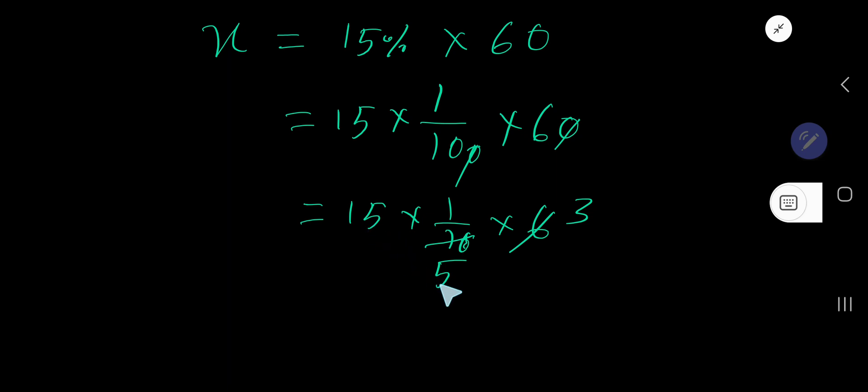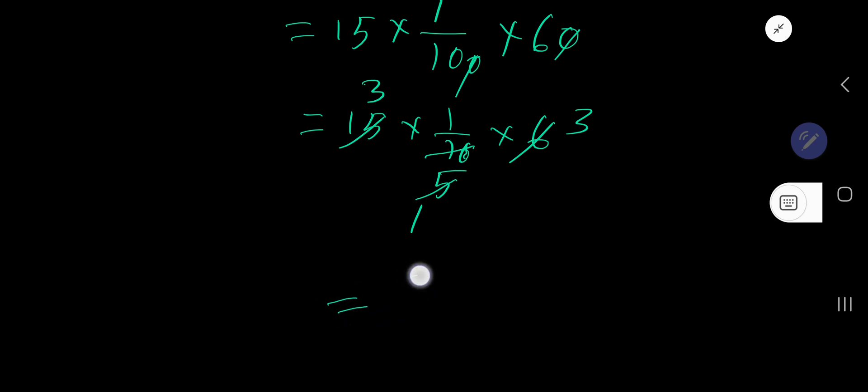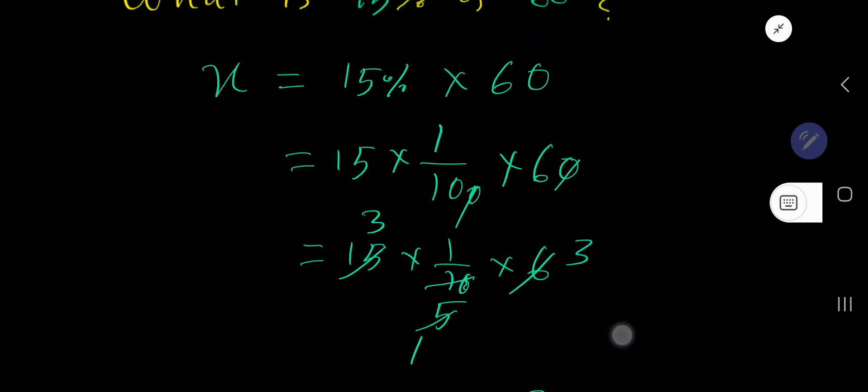This is divisible by 5, this is divisible by 5. If you divide 5 by 5, you will get 1. If you divide 15 by 5, you will get 3. So you are getting here 3 times 1 times 3 divided by 1, which is 3 times 3 times 1, that is 9 times 1, that is 9. 9 is the answer.